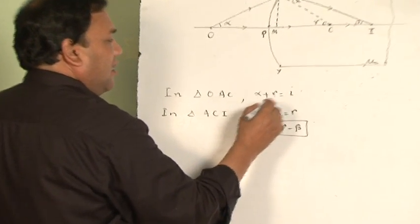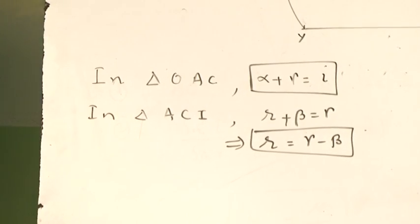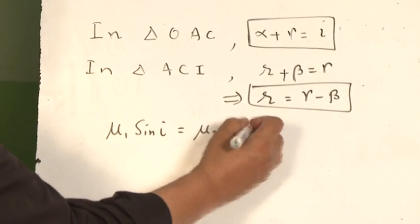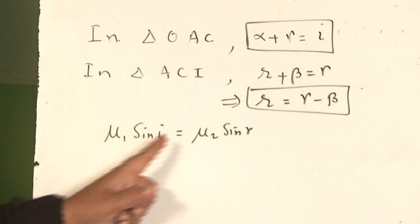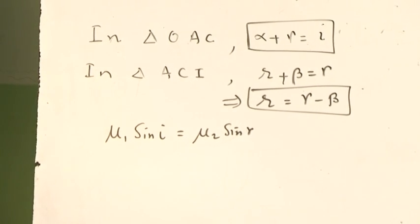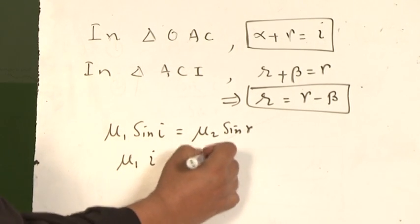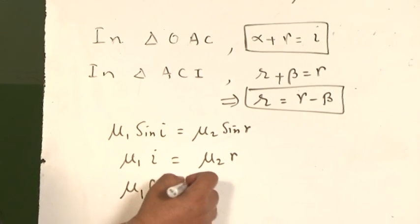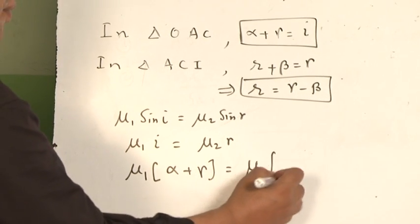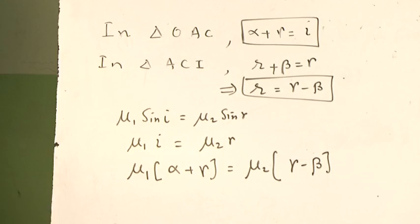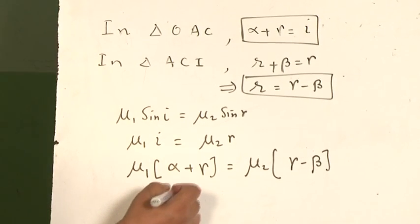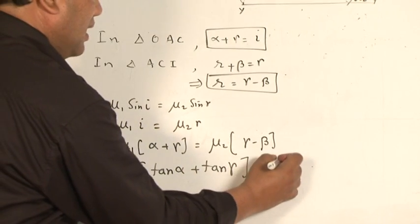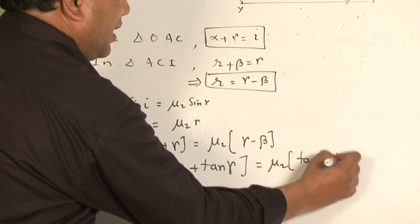Snell's law gives mu 1 sin i equal to mu 2 sin r. Since the angles are very small, I can write mu 1 i equal to mu 2 r. Substituting the values of i and r: mu 1 times (alpha plus gamma) equals mu 2 times (gamma minus beta). Again, since the angles are small, alpha, beta, and gamma can be replaced by their tan values: mu 1 (tan alpha plus tan gamma) equals mu 2 (tan gamma minus tan beta).